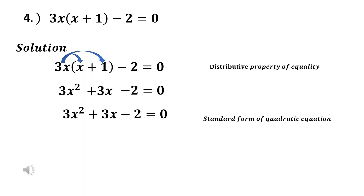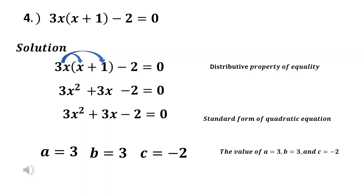Since it's already in standard form, we identify the value of a, b, and c. The value of a is 3, the value of b is 3, and the value of c is negative 2. That is how you transform the given equation and also identify the value of a, b, and c.